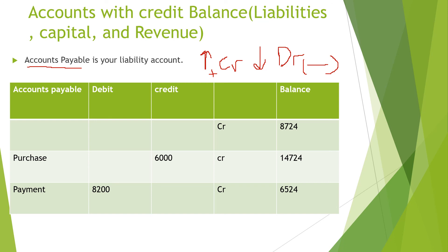What happens when we decide to pay some of this bill? We pay $8,200. When we are paying part of the accounts payable bill, we are decreasing the balance. When we decrease the balance, we debit it and subtract from the balance. Subtracting $8,200 from $14,724 leaves a new credit balance of $6,524 remaining in accounts payable for the next transaction or period.